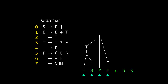The right-hand side T asterisk F matches the right-hand side of production three, so that handle T times F is replaced with T on the left-hand side. YAC fires the action associated with production three at this point. Then we notice T is on the right-hand side of production two, so we reduce that to an E. Now the plus is shifted onto the stack, and then the five, which is another num, is shifted onto the parser stack.